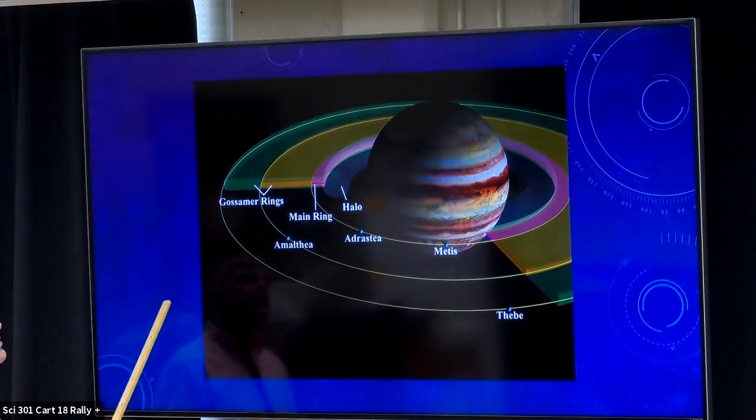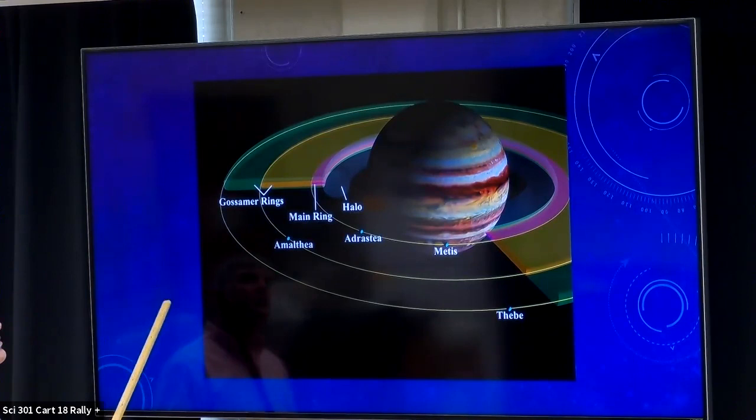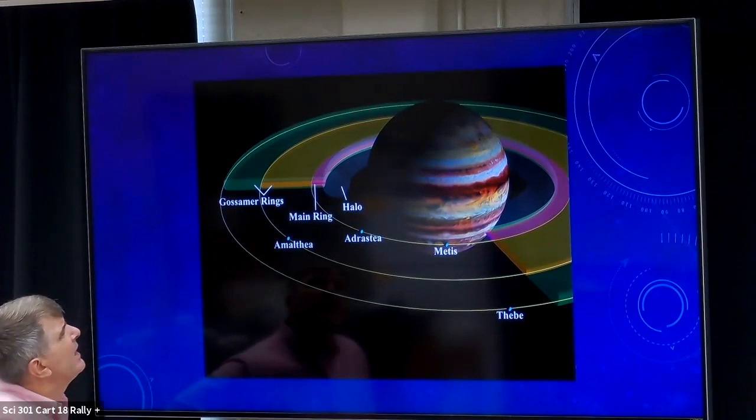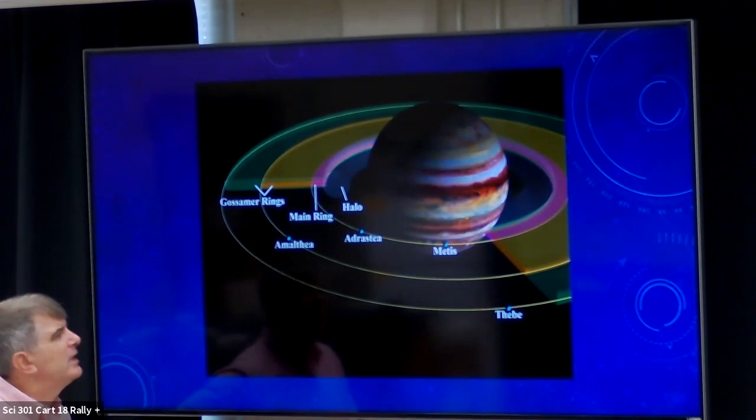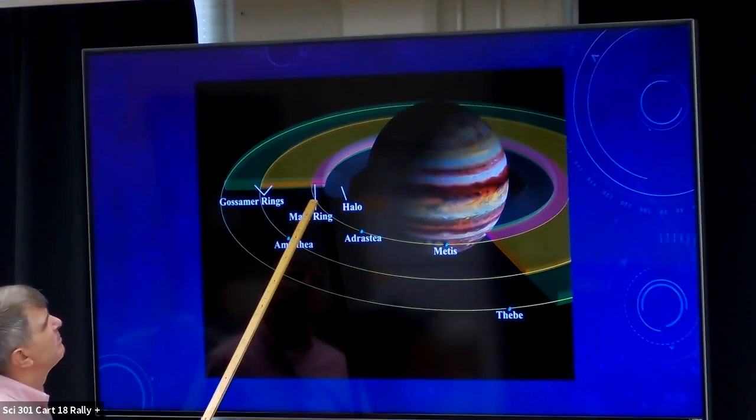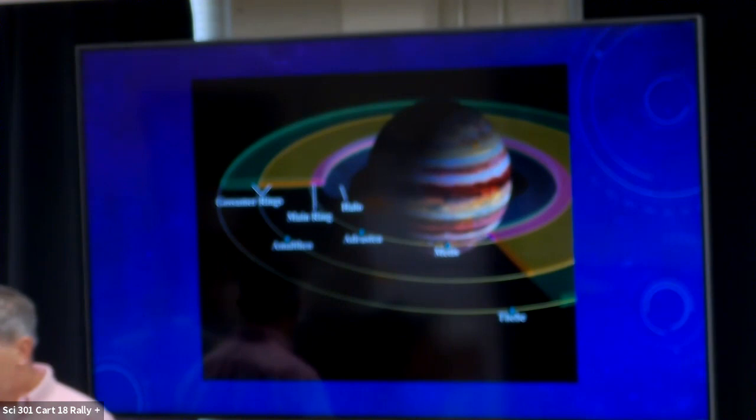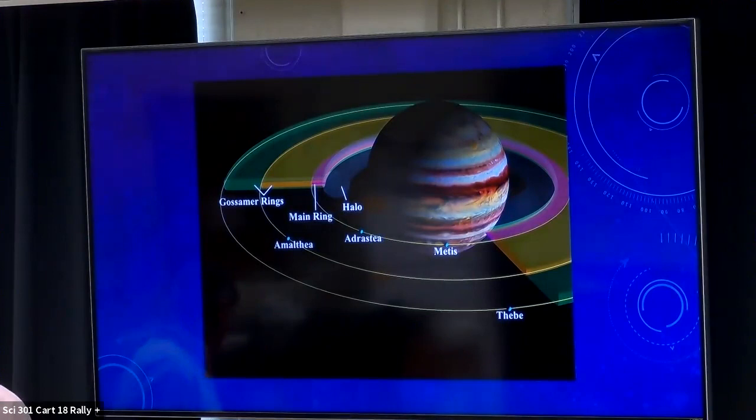The darker gases represent cooler gas and the lighter gases represent warmer gas, giving you that contrast. Jupiter also has a ring around it — a very thin ring made up mostly of smoke-sized particles. We didn't know Jupiter had a ring until Voyager went past and detected it; they're extremely hard to see. There are a couple of moons actually inside the rings, and we'll talk a little bit about how rings form.